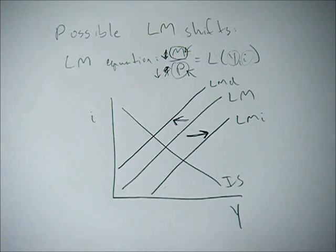And so those are the common shifts that you'll see with the IS and the LM curves. Generally, if you recognize those things, then you'll have a pretty good understanding of what's going on in the model.